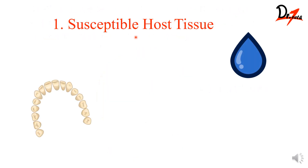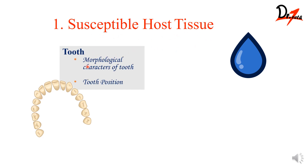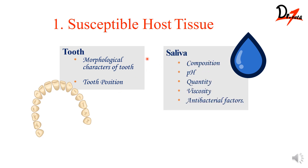Now let's move on to each of the factors. The first is the susceptible host tissue. Under this, we need to look at the morphological characters of the tooth, the position of the tooth, and saliva. For saliva, we need to know its composition, pH, quantity, viscosity, and antibacterial factors — all of these influence dental caries. Let's see them one by one.